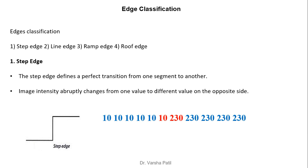A step edge defines the perfect transition from one segment to another — image intensity abruptly changes from one value to a different value on the opposite side. Step edges generally appear in an image when the image is created artificially, for example, with a paintbrush. We can see one particular gray level transitioning to another particular gray level.